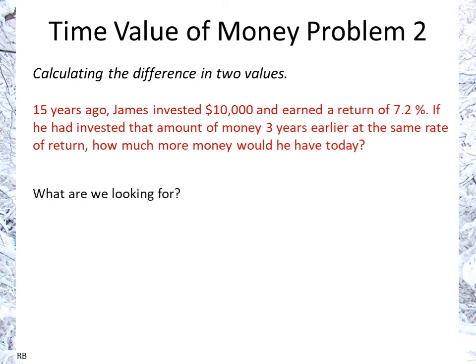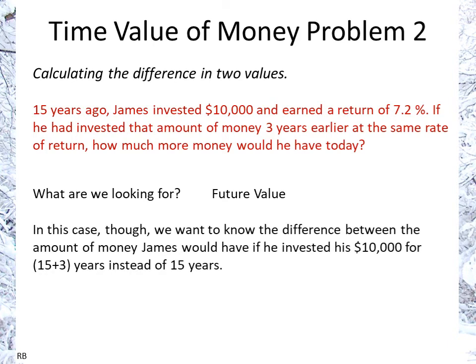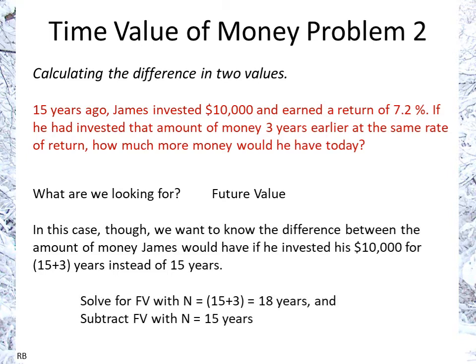So what are we looking for? Well, in terms of present and future values, even though we're talking about today, we're comparing a certain amount of time in the past to how much he would have today, and we're looking for today's value. So it's the future value in terms of the calculation. In this case, we want to know the difference between the amount of money he would have if he invested $10,000 for 15 plus three years — so 18 instead of 15 years. We just need to solve the future value for 18 years and subtract the value for 15 years.